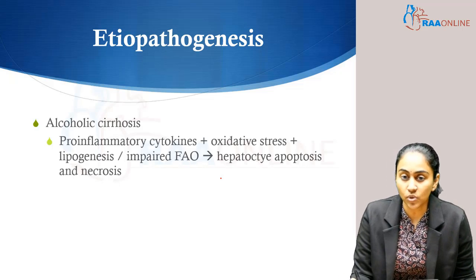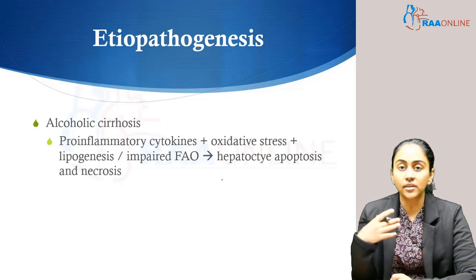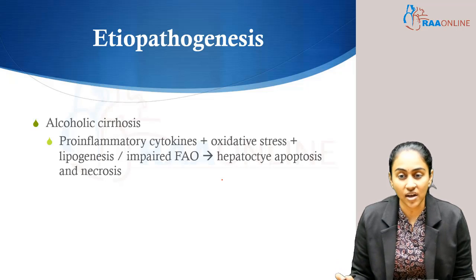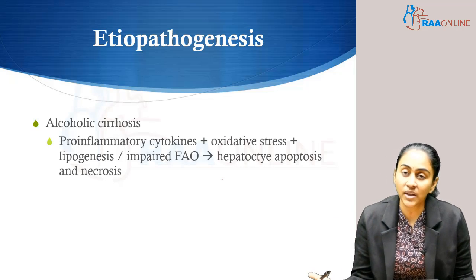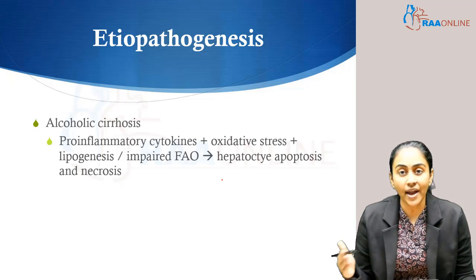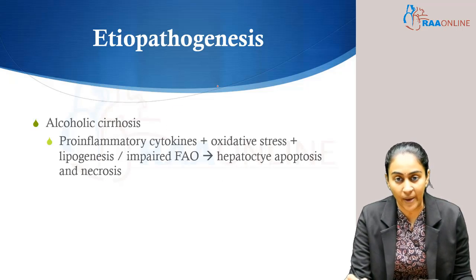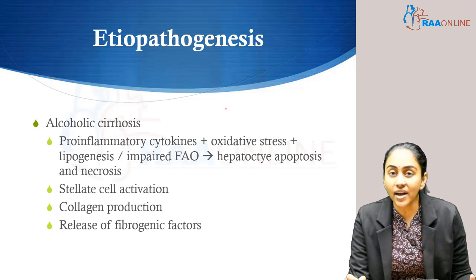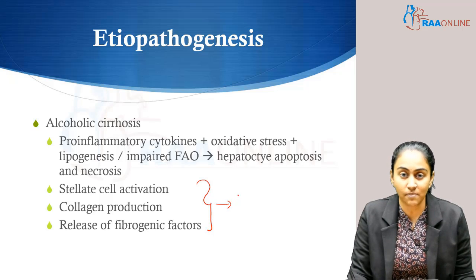In alcoholic cirrhosis, all the pro-inflammatory cytokines, oxidative stress, lipogenesis, and impaired fatty acid oxidation — the downstream end products of alcohol metabolism acting through all these different mechanisms — together result in hepatocyte apoptosis and necrosis. There is stellate cell activation, collagen production, and release of fibrogenic factors, all of which result in progressive hepatocyte damage and fibrosis, which is what characterizes alcoholic cirrhosis.